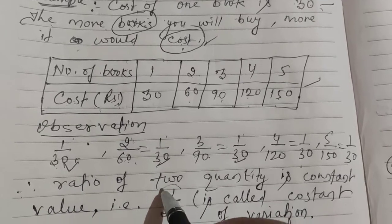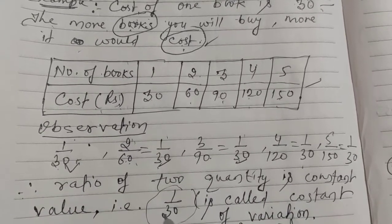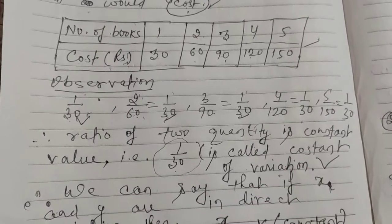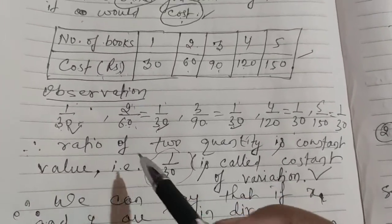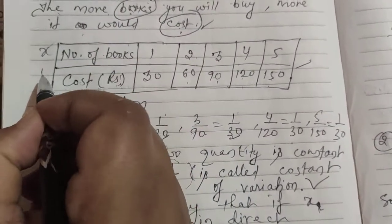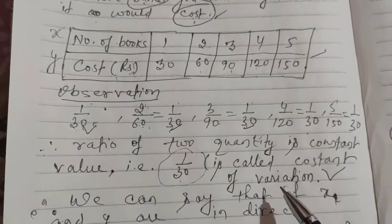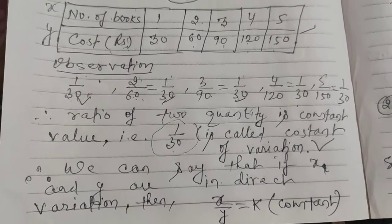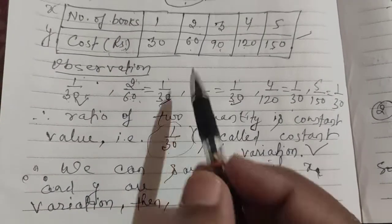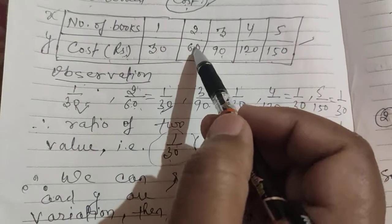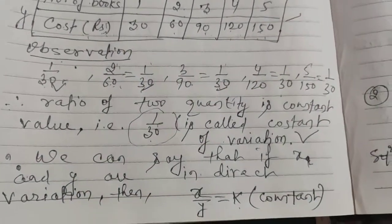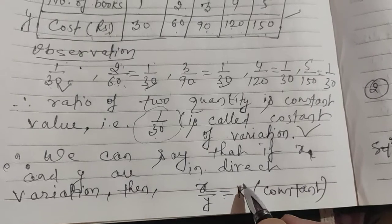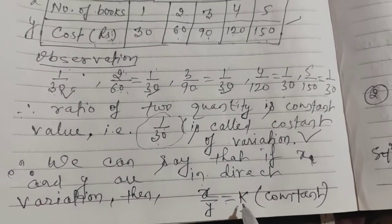The ratio of the two quantities — number of books and cost — is the same, that is 1/30. The ratio of two quantities is constant, and this constant value, which is the ratio of the two quantities, is called the constant of variation. If x and y are two quantities in direct variation, then the ratio x divided by y is a constant value, represented by k, which is called the constant of variation.